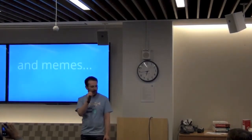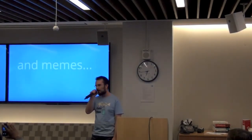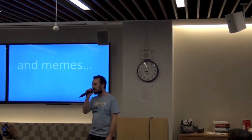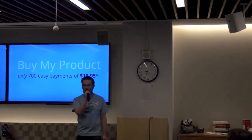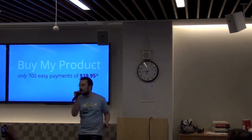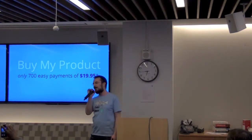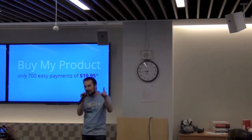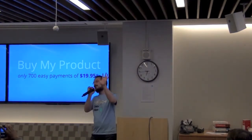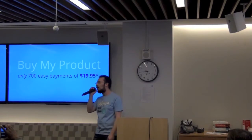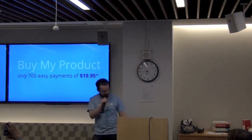At Basho, we make databases — and we also make a lot of memes, which you'll be privy to if you follow me on Twitter. And I want you to buy my products — dial now and you'll get not one, not two, but five nodes of Riak for only 700 easy payments of $19.95.